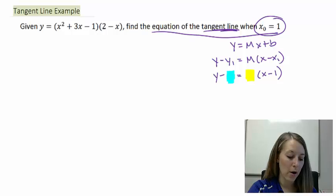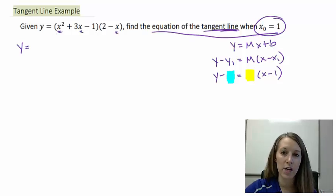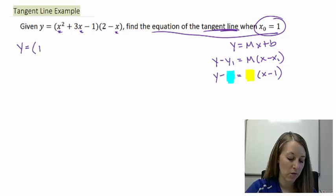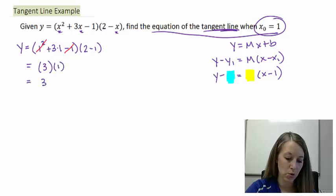Let's go ahead and start with our y value. If we want our y value when x was equal to 1, then all we have to do is plug 1 into our equation each and every time we see an x. So we have 1 squared plus 3 times 1 minus 1 times 2 minus 1. In my first parentheses, my 1 squared and my negative 1 cancels out, leaving me with 3. And my 2 minus 1 leaves me with 1. So that tells me that my y value is 3.